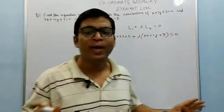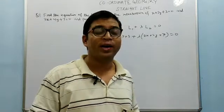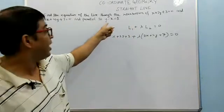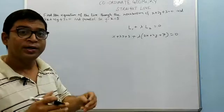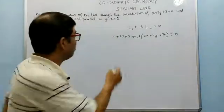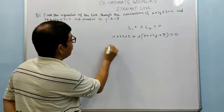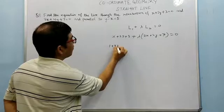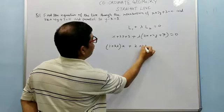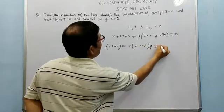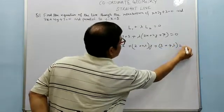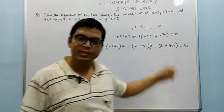We will get many lines with different values of lambda, but we have to find a particular line satisfying that it should be parallel to the given line. First we put it in the standard form ax plus by plus c equal to zero. Combining, we get: (1 plus 3 lambda)x plus (2 plus 4 lambda)y plus (3 plus 7 lambda) equal to zero.